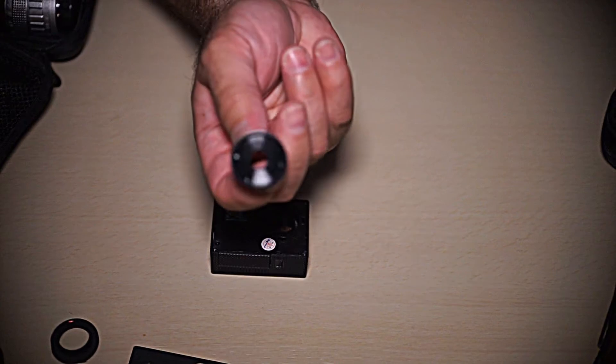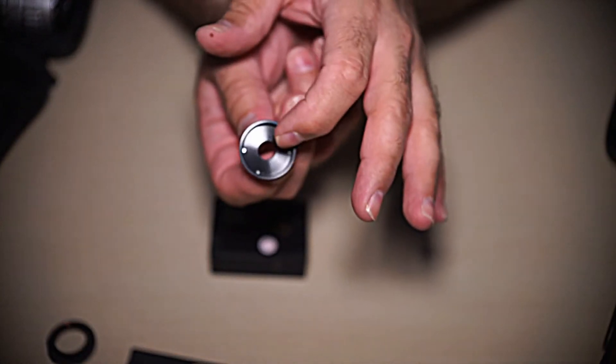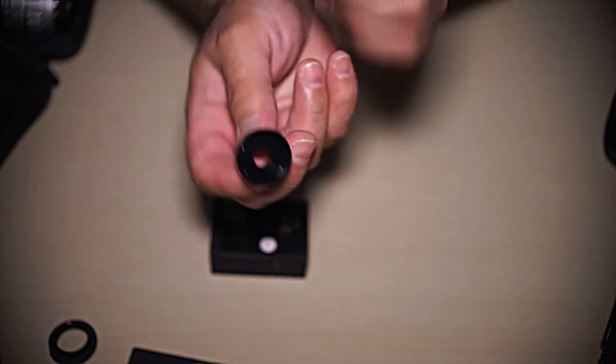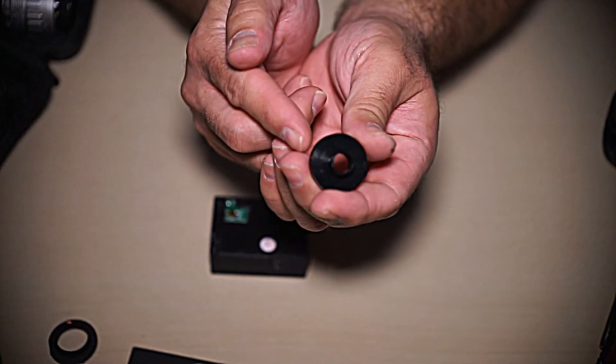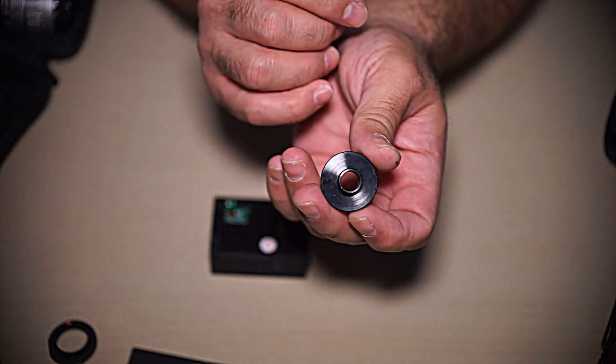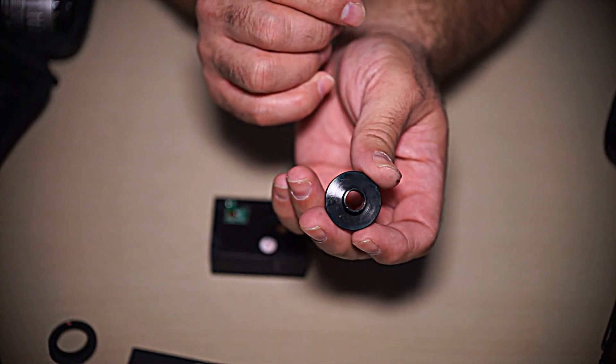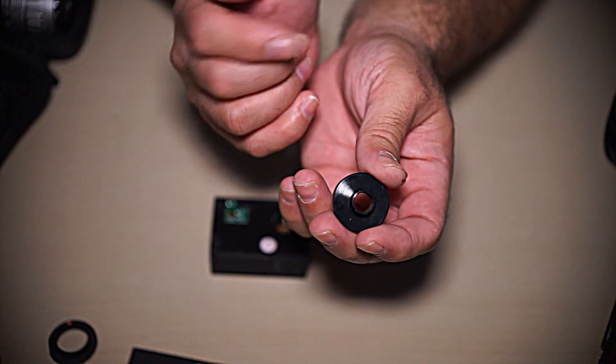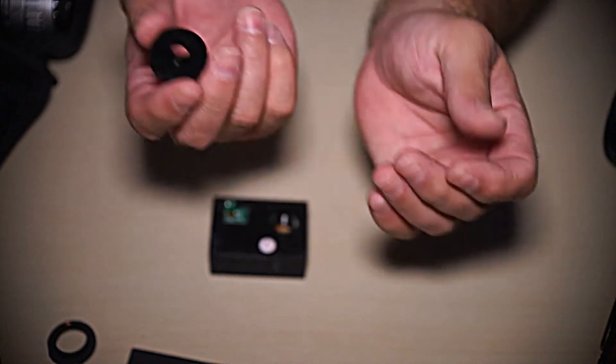By getting this adapter. On one side is C-CS mount. The other side is the same threads as the GoPro and the SJ4000 and their clones. So I'm simply going to screw this in.